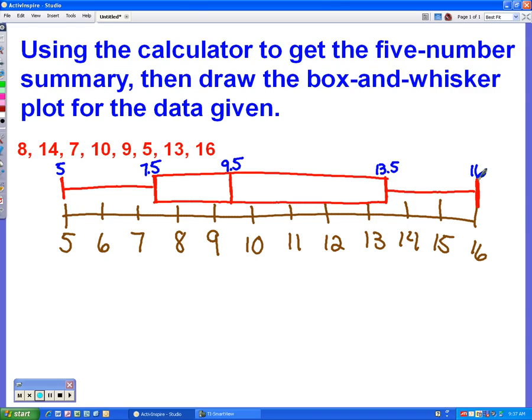And that's how we create the five number, find the five number summary and make the box and whisker plot with the calculator. See you later.